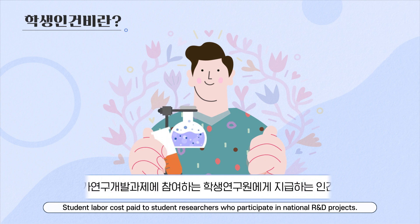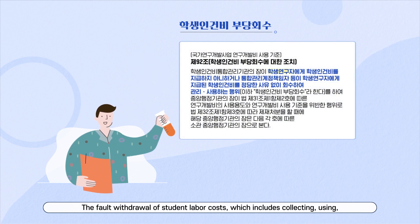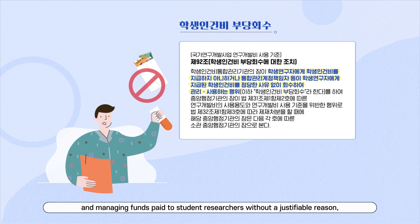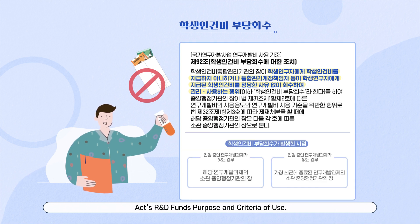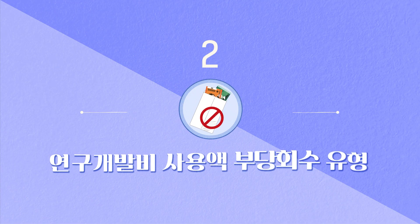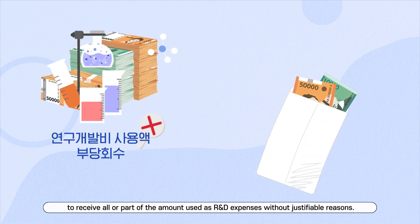Student labor costs are paid to student researchers who participate in national R&D projects. The false withdrawal of student labor costs — which includes collecting, using, and managing funds paid to student researchers without a justifiable reason — is a violation of the National R&D Innovation Act's R&D Fund's purpose and criteria of use. It is prohibited for employees or participating researchers from R&D institutions to receive all or part of the amount used as R&D expenses without justifiable reasons.